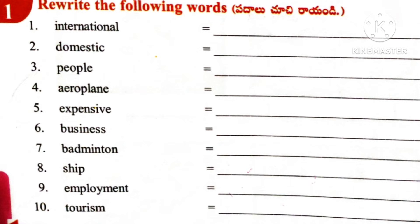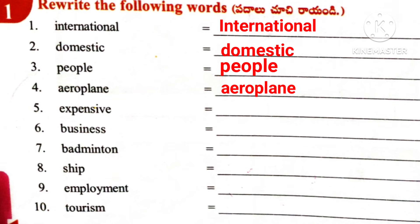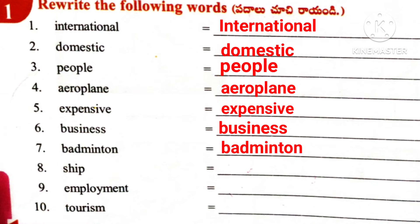Worksheet 2, Roman number 1. Rewrite the following words: International, Domestic, People, Aeroplane, Expensive, Business, Badminton, Ship, Employment, and Tourism.